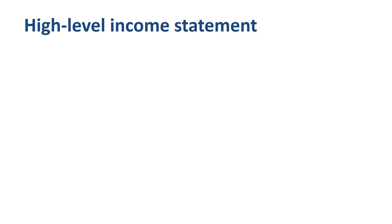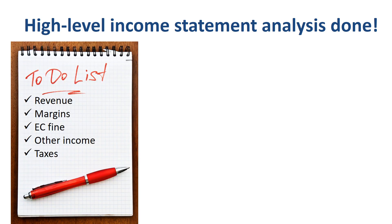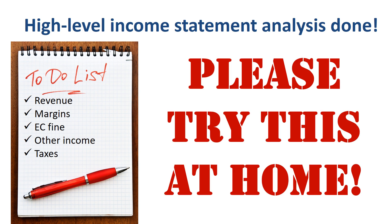We have succeeded in performing a high-level income statement analysis of Alphabet Inc for 2017, focusing on five areas: revenue, margins, European Commission fine, other income, and taxes. As the video is for educational purposes, please do try this at home. Which observations did you come up with? Are there any items missing in this analysis? I am very interested to hear your comments — please post them below the video.